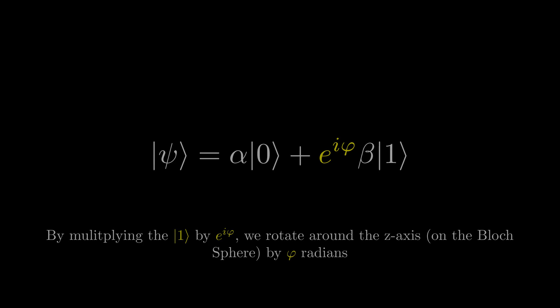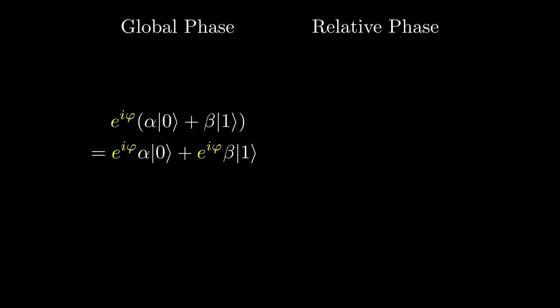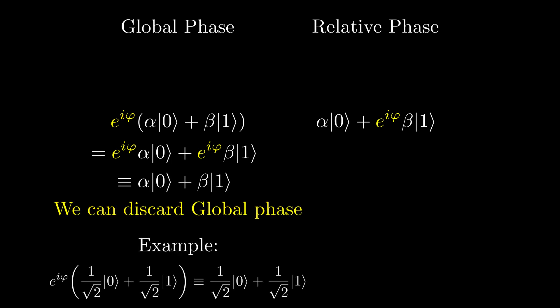There are two types of phase: global phase and relative phase. Global phase is when the entire qubit is multiplied by a complex number, and relative phase is when just the |1⟩ state is multiplied by a complex number. It turns out the global phase is physically irrelevant. So the state e^(iφ)(1/√2|0⟩ + 1/√2|1⟩) is logically equivalent to the state 1/√2|0⟩ + 1/√2|1⟩.